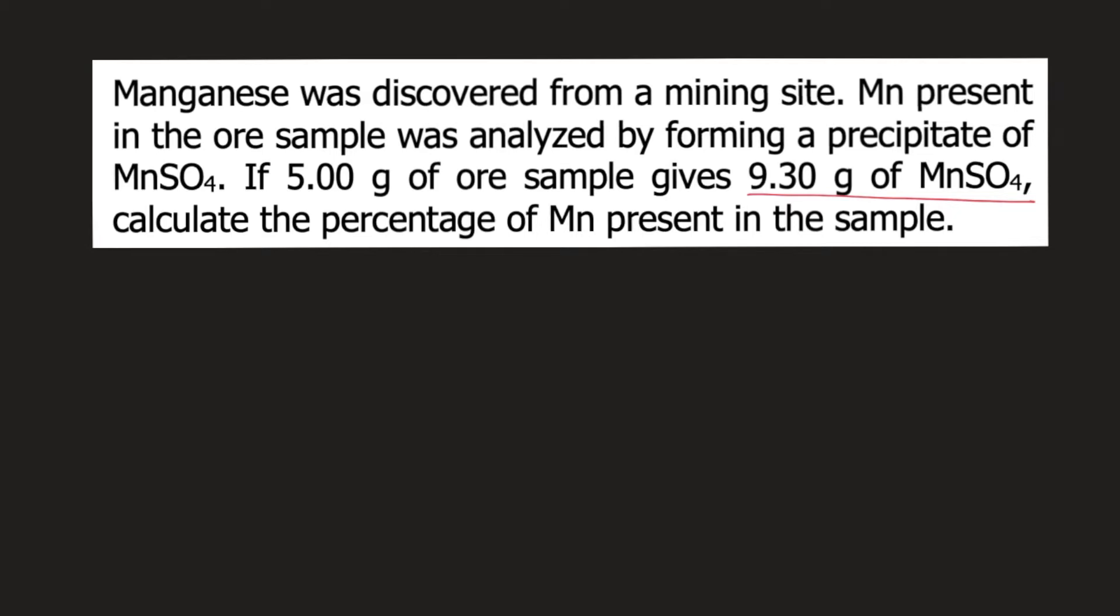So the problem says that the ore forms 9.30 grams of MnSO4. So that would be our starting value, 9.30 grams MnSO4. The first step is to convert grams of MnSO4 into moles of MnSO4. So therefore, we need the molar mass of MnSO4.